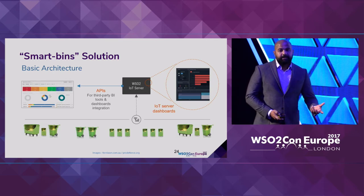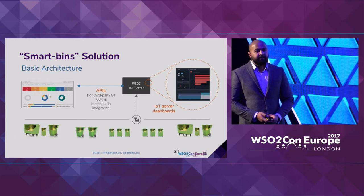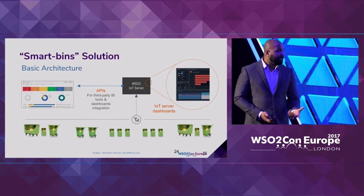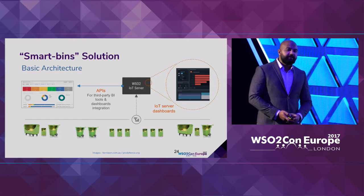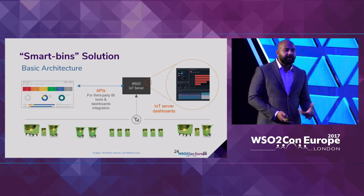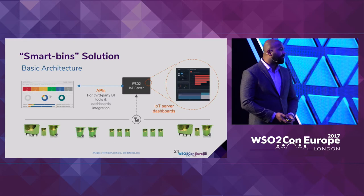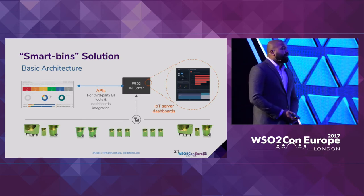This allows optimization of resource utilization when collecting garbage within the city. They can track garbage level and garbage types — if it needs to be collected immediately, a truck can be sent right away; if garbage levels are low, collection can be postponed. Resource utilization is optimized based on information gathered from these smart bins.